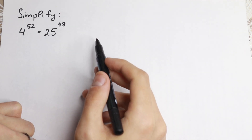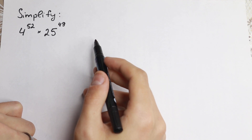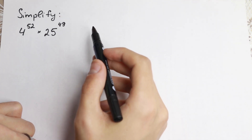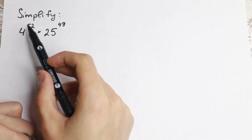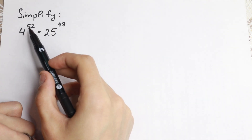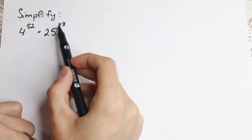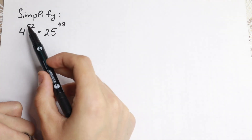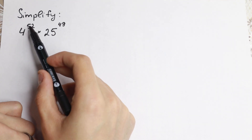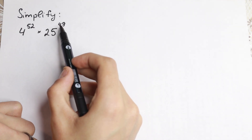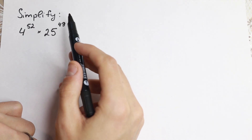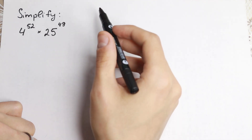But I want to show you a really good trick for how we can solve this easily. First of all, this 52 is really useful because we have 49, and 52 is good to write as 49 plus 3.